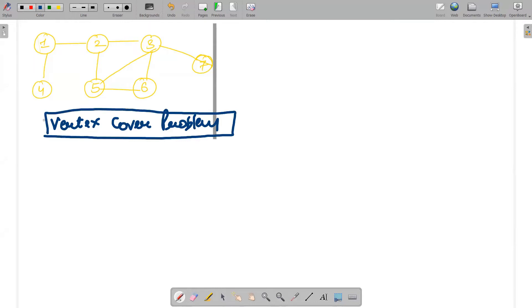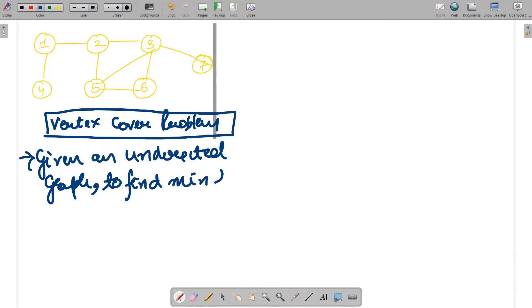What is vertex cover problem? So you have been given, if you see above, this is an undirected graph. So what is the problem? The problem is to find minimum subset of vertices that covers all edges of graph.